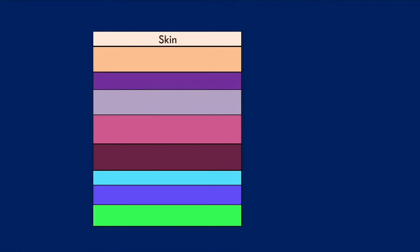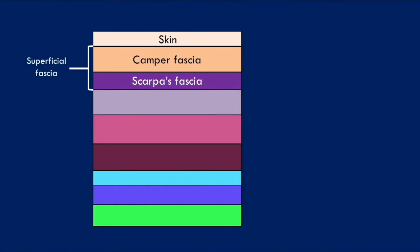The most superficial layer is the skin. Below the skin there is the Camper's fascia, and below that is Scarpa's fascia. Together, the Camper's fascia and Scarpa's fascia are known as the superficial fascia. Below the Scarpa's fascia is the external oblique muscle, and below that is the internal oblique muscle.